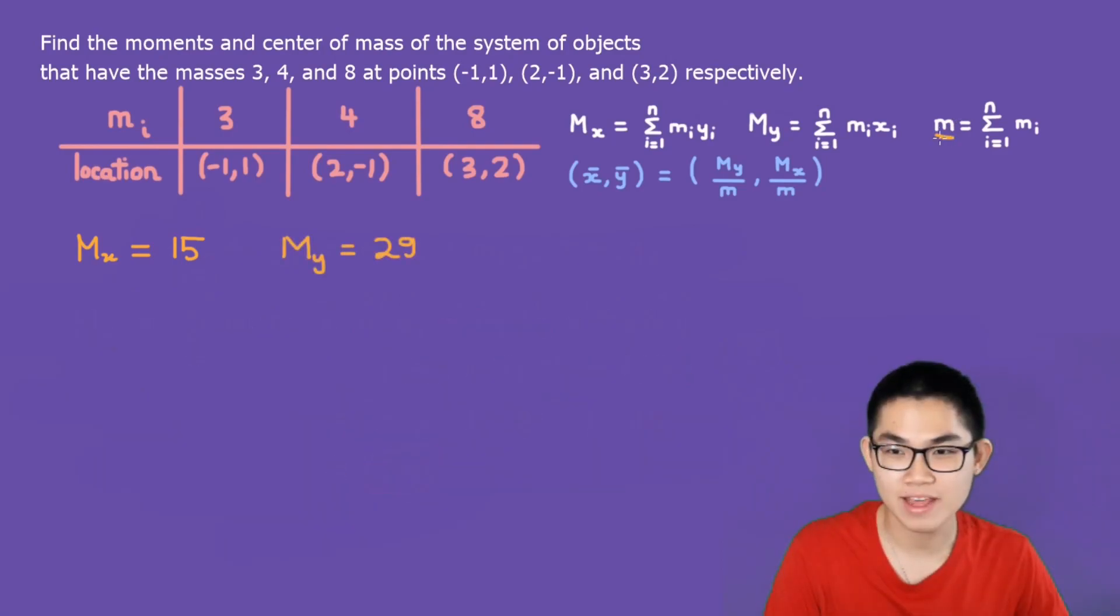This m right here represents the total mass. So m is the sum from i equals 1 to 3 of m_i. That's basically 3 plus 4 plus 8, which is 15.